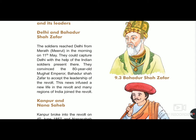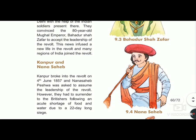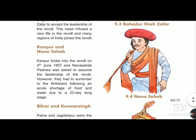In Kanpur, the leader was Nana Sahib Peshwa. The revolt started on 4th June in Kanpur and Nana Sahib Peshwa was asked to assume leadership. However, they had to surrender to the Britishers following an acute shortage of food and water due to a 22-day-long siege. The British control and resulting food and water crisis forced Nana Sahib Peshwa to surrender.